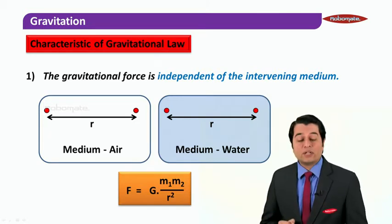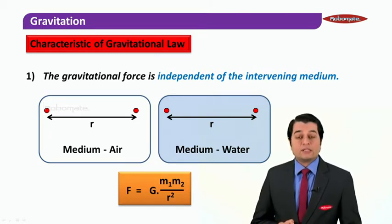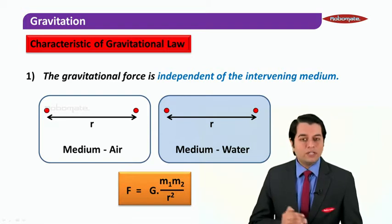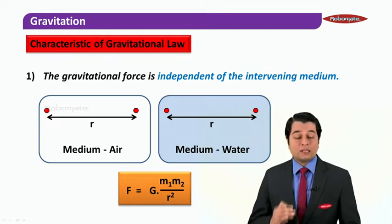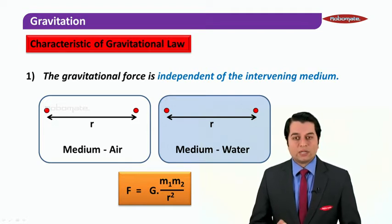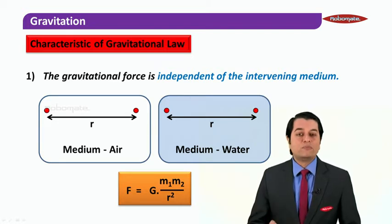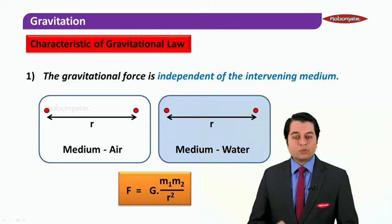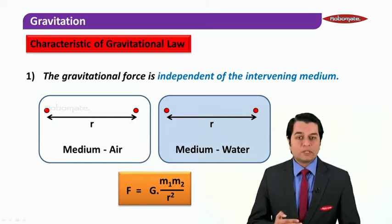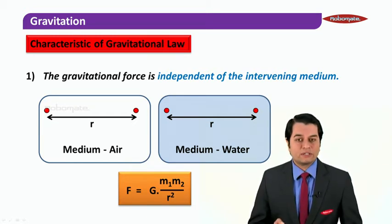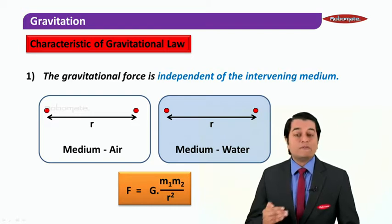The answer lies in the mathematical correlation from the previous module: gravitational force only depends on the product of the masses and the square of the distance between them. If the medium changes, the gravitational force will not change — it does not depend on any medium. So whether the two masses are in air or water, they experience the same attractive force.